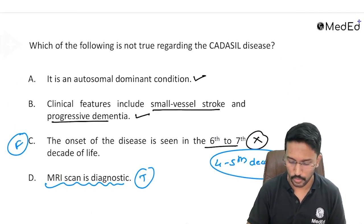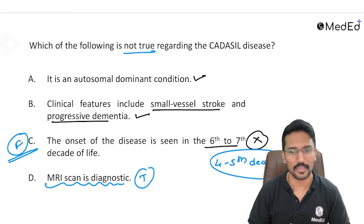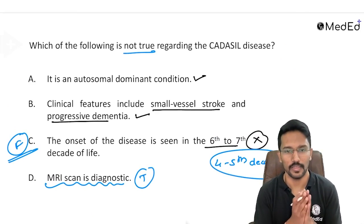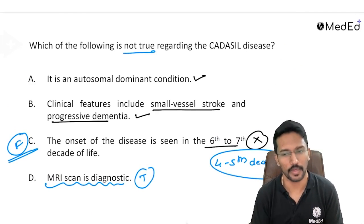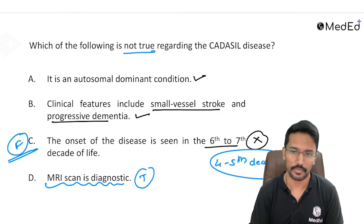So they asked us to find out not true and option C is not true. The onset of disease is usually in 4th or 5th decade of life and not 6th or 7th.